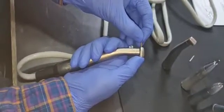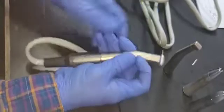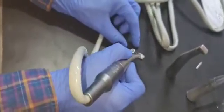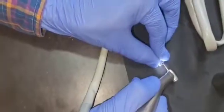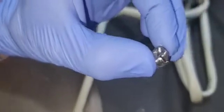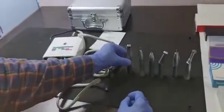I am using an air rotor metal cutting bur. You can see, I will show you how to cut this crown, metal crown. In a fraction of seconds, you can cut the crown easily. So I will show you now, one by one.